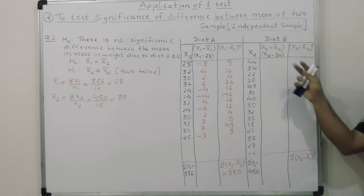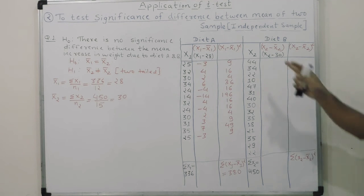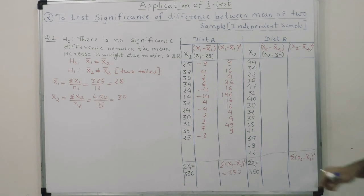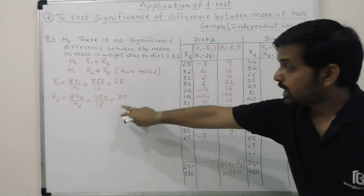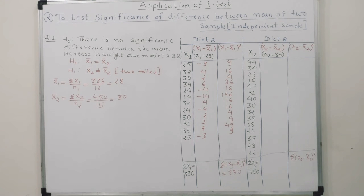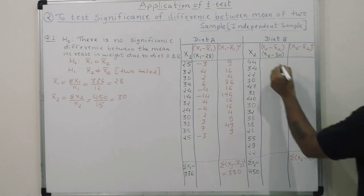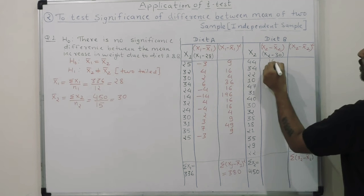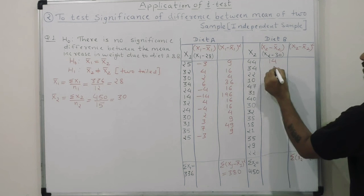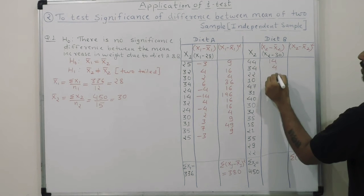Similarly, for diet B, we find x2 minus x̄2 where x̄2 is 30. For example: 44 minus 30 equals 14, 34 minus 30 equals 4, and so on for all 15 values.